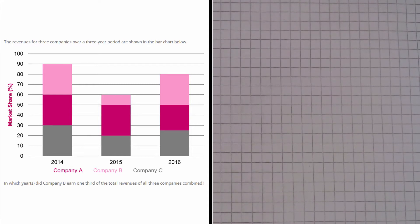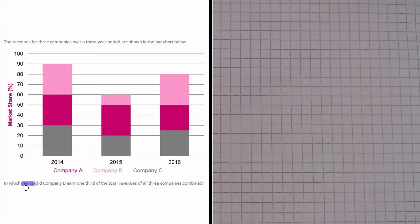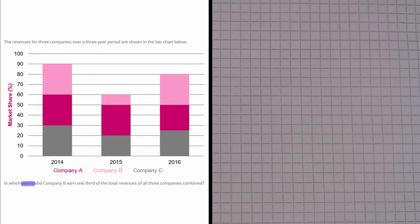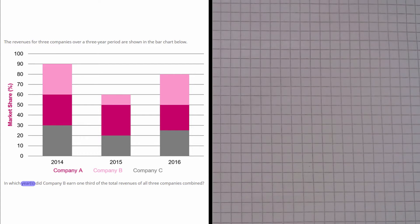So we have to be a little bit careful here, notice how the question says years. So if we find one, we're still going to have to check the other two because there may be more than one year where this happens. Now this question just boils down to finding a proportion. So Company B is obviously illustrated by the light pink blocks on this chart.